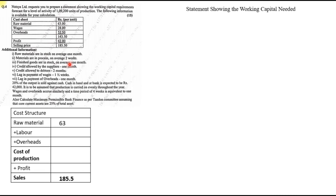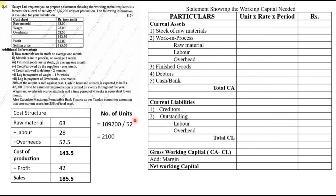Also calculate Maximum Permissible Bank Finance (MPBF) per the Tandon Committee, assuming core current assets are 25% of total current assets. To solve working capital, first prepare two working notes. Working Note 1 — cost structure: sales 185.5, raw material 63, wages 28, overheads 52.5, total cost 143.5, profit 42. Working Note 2 — units per week: 1,09,200 ÷ 52 weeks = 2,100 units per week.